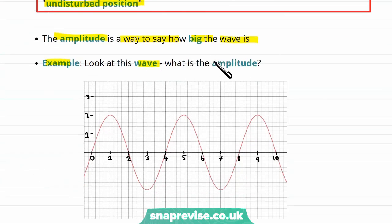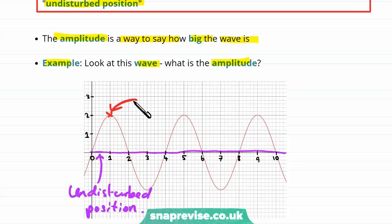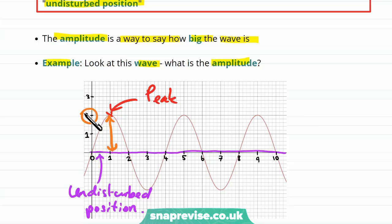Let's look at an example and find the amplitude. We can see that the middle line represents the undisturbed position. This point here is a peak of the wave, and we need to find the distance from this peak — the maximum displacement — to the undisturbed position. That distance is 2, so our amplitude is 2.